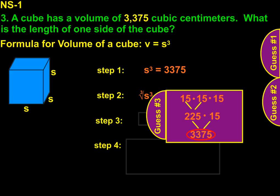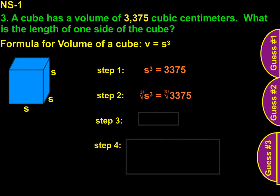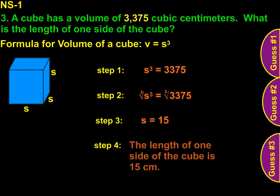And 15 times 15 is 225. 225 times 15 works out to be exactly 3,375. So that tells me that S is equal to 15. And that the length of one side of the cube is 15 centimeters.